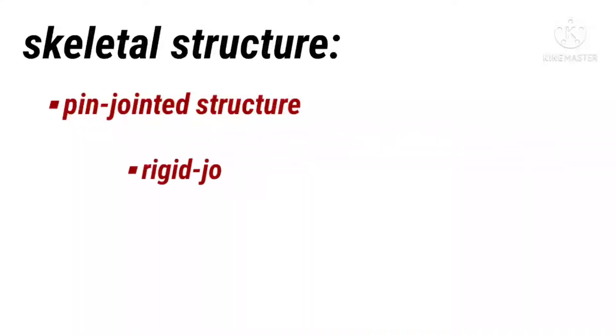First, we will discuss pin-jointed structure. The riveted and bolted joints in steel structures are treated as pin-jointed structures. Next is rigid-jointed structure. The reinforced concrete frame structures are treated as rigid-jointed structures.